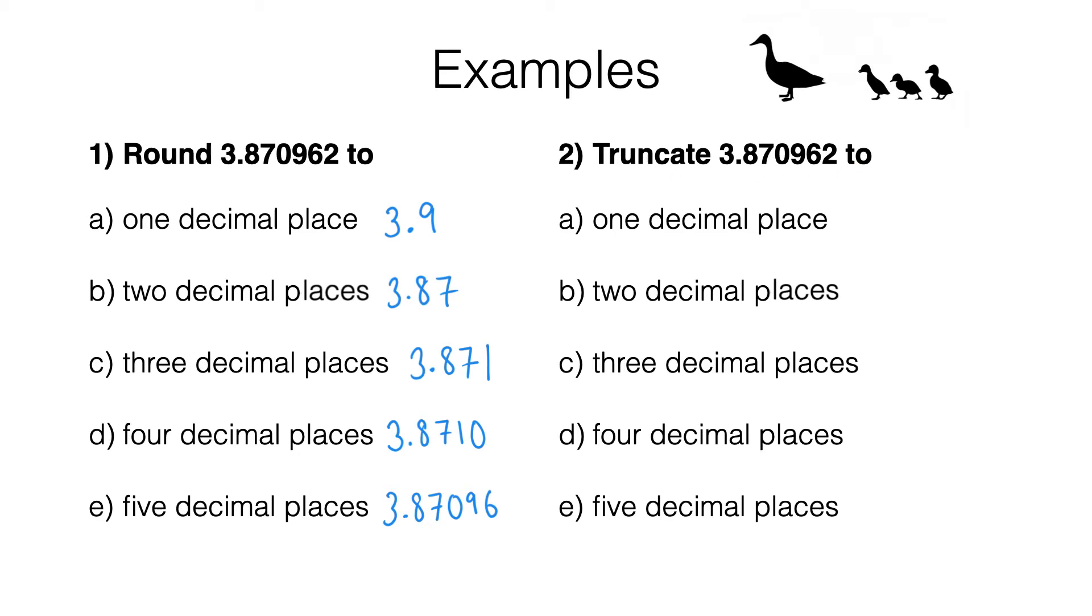Truncating is actually easier than rounding. The word truncate means cut short in everyday English, and that's exactly what we do here. To truncate 3.870962 to one decimal place, we simply cut off all the digits after the first decimal place, leaving us with 3.8.